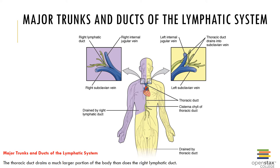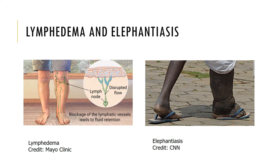The thoracic duct drains the left side of the head, the left arm, the left shoulder, and the left side of the thoracic cavity, all of the abdomen, pelvic region, and both legs. The thoracic duct empties into the left subclavian vein. When there is blockage of the lumbar trunks or subclavian trunks by a certain type of worm, this can cause severe lymphedema known as elephantiasis, which you can see in the figure.